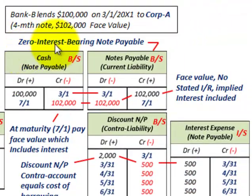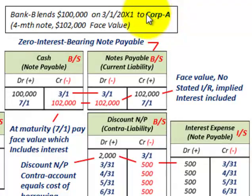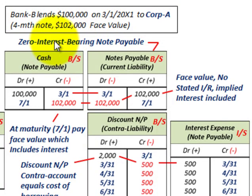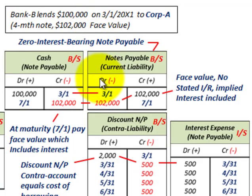Now let's look at the zero interest bearing note. Using the same example: Bank B lends $100,000 on March 1st to Corporation A, again for a four-month notes payable. But there isn't any stated rate of interest. Instead, the face value at maturity on this notes payable is $102,000.